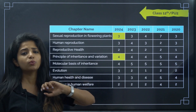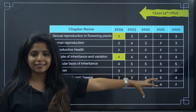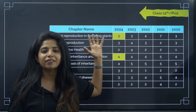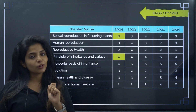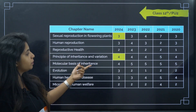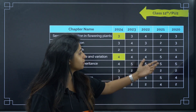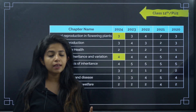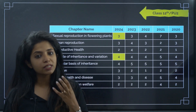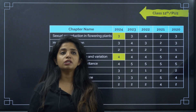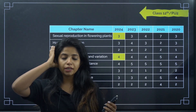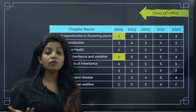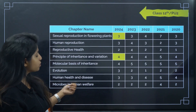'Principles of Inheritance and Variation' is a very important genetics chapter — consistently 4 to 5 questions. 'Molecular Basis of Inheritance' is 5, 5, 5, 5, 5, then 4 — very consistent. These are chapters which are promising; if you study them, you'll definitely score. However, don't rely only on high-weightage chapters because trends change — low-weightage chapters can suddenly become important.